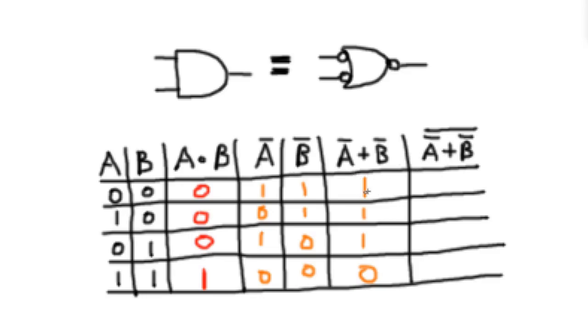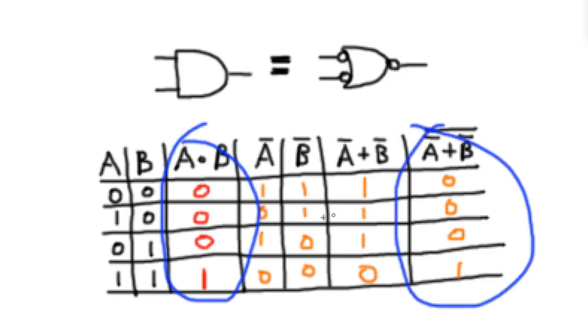And that is the ORing of those two values. Now we take the opposite of that, which is just inverting all these, and we get 0, 0, 0, 1. And you'll notice here that both of these results are exactly the same.